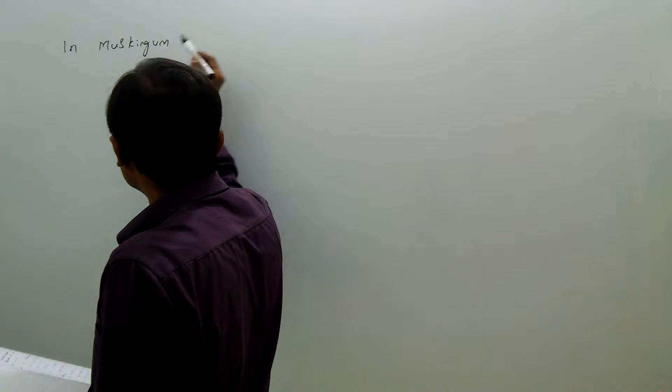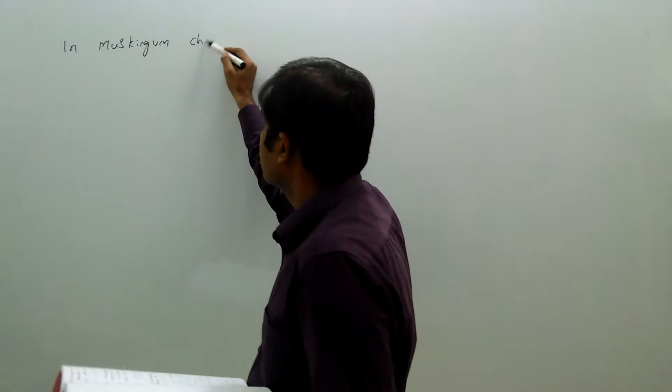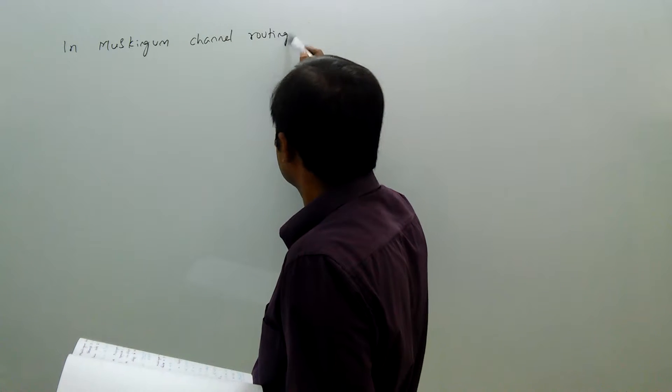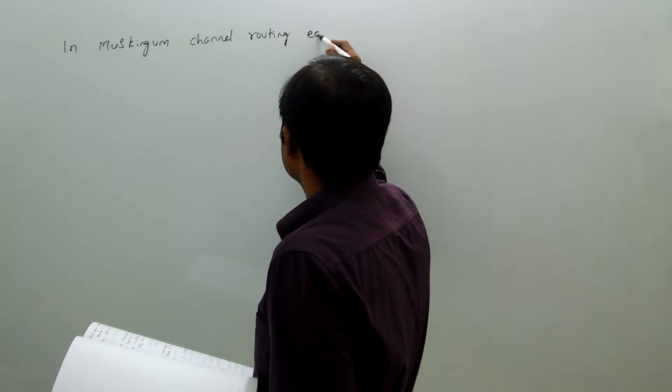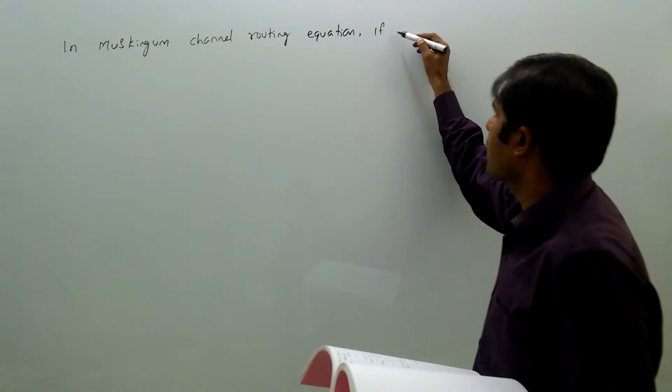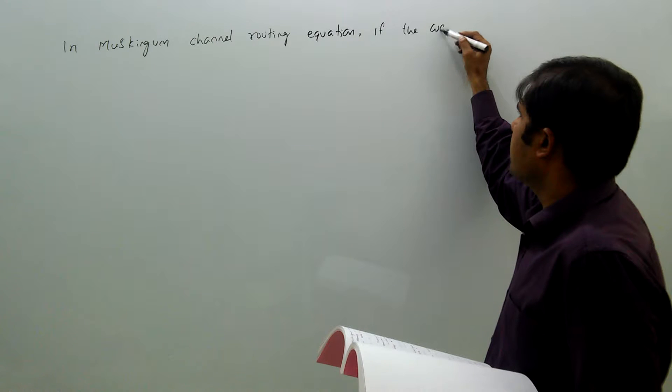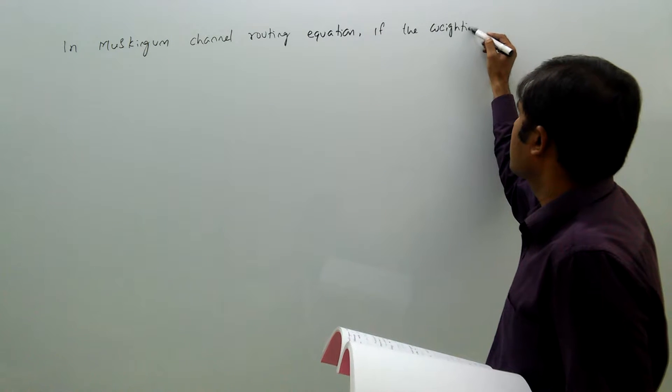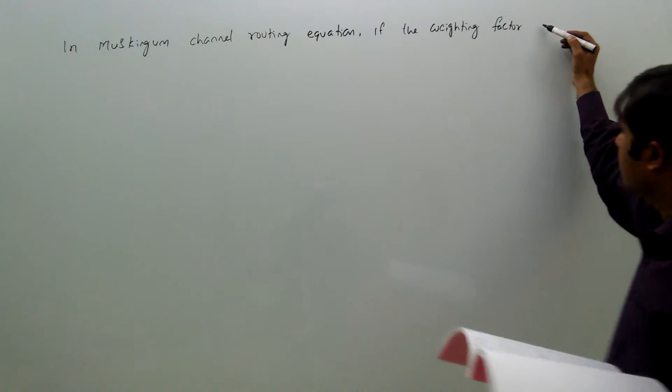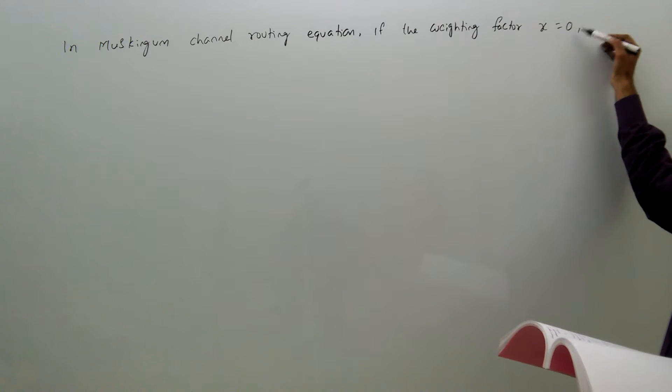In Muskingum channel routing equation, if the weighting factor x equals 0,